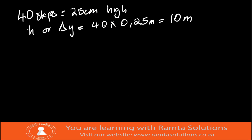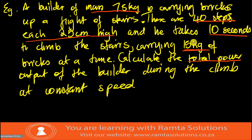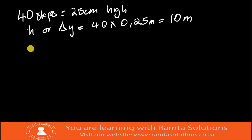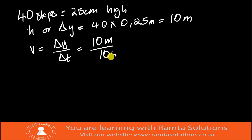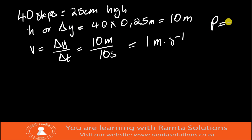The question says he takes 10 seconds to climb the stairs and his speed is constant. So his speed is v = Δy/Δt = 10 meters / 10 seconds = 1 meter per second. We will use P = F×v, but we need to find the force first.